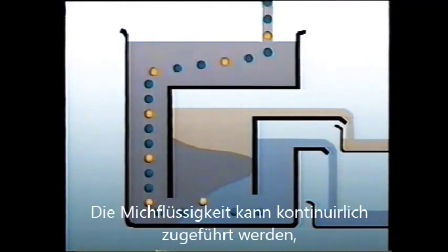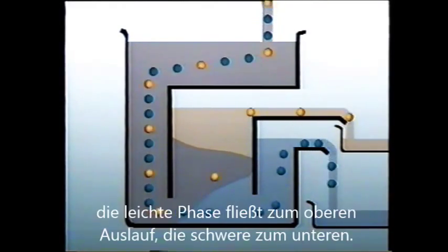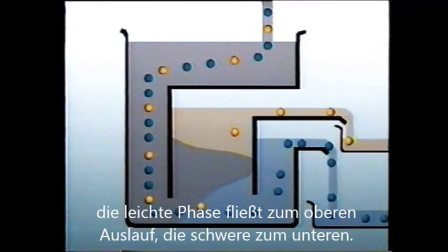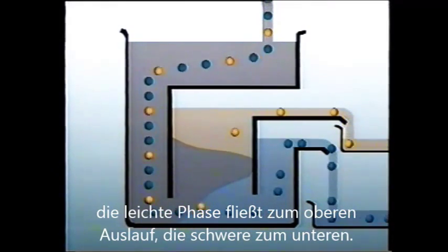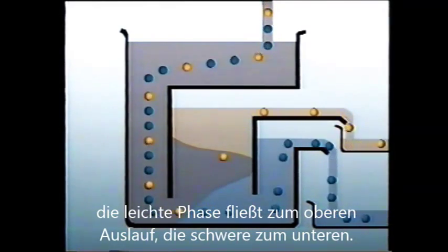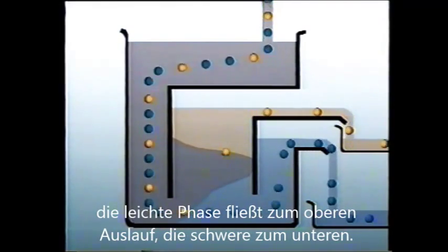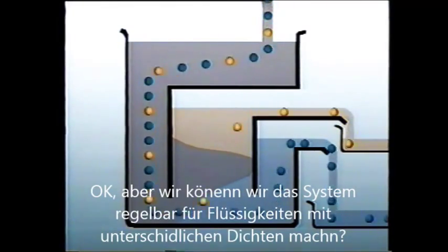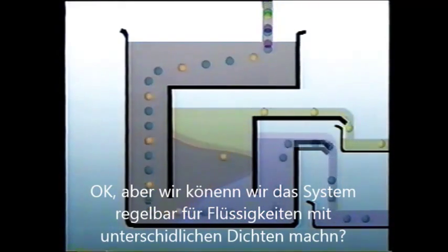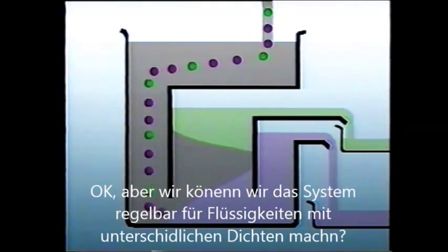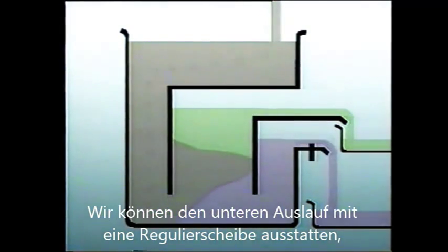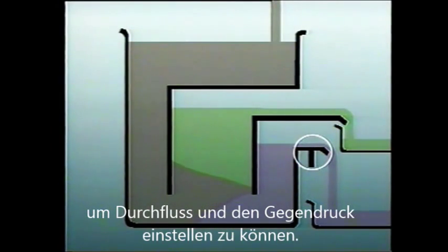The mixture is fed constantly through the inlet section, after which it passes under the first baffle and into the tank where it forms the interface. The light phase then rises to the top outlet. The heavy phase sinks towards the bottom and is discharged through the lower outlet. But how can we improve the tank so as to make it adjustable for other immiscible liquids of different densities? We could provide the lower outlet with a weir, or dam, to effectively adjust the height of the outlet, and hence the back pressure.